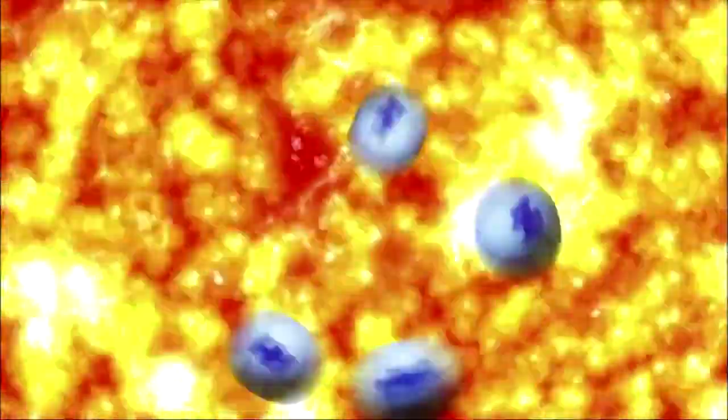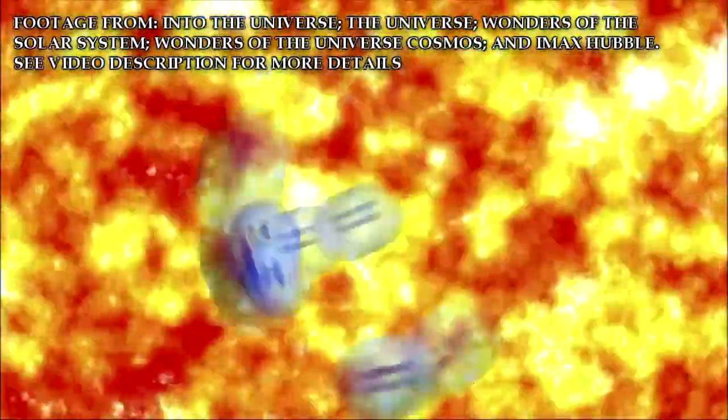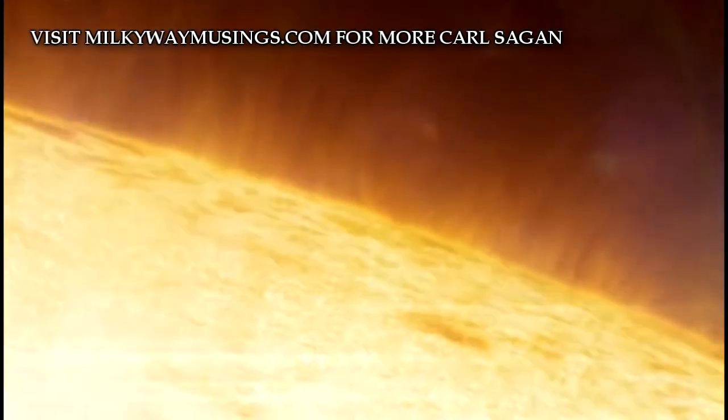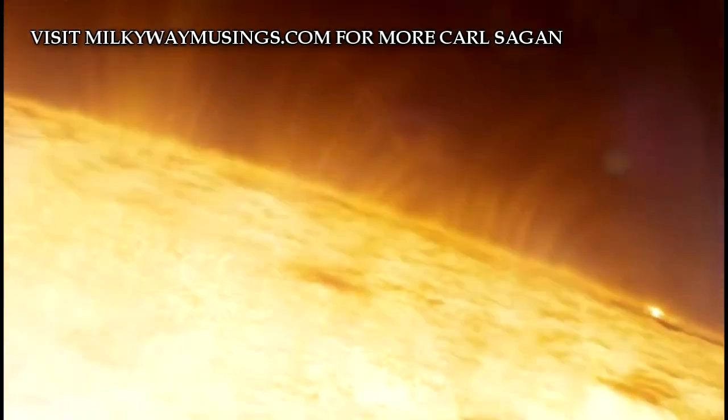All this churning power is driven by the Sun's interior, which is converting 400 million tons of hydrogen into helium every second. The Sun is a great fusion reactor into which a million Earths would fit.